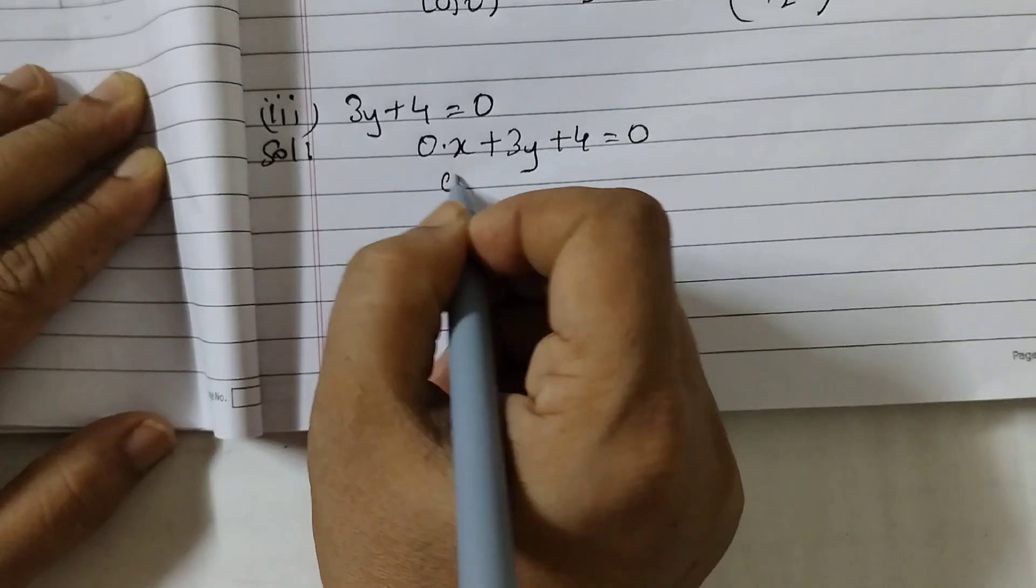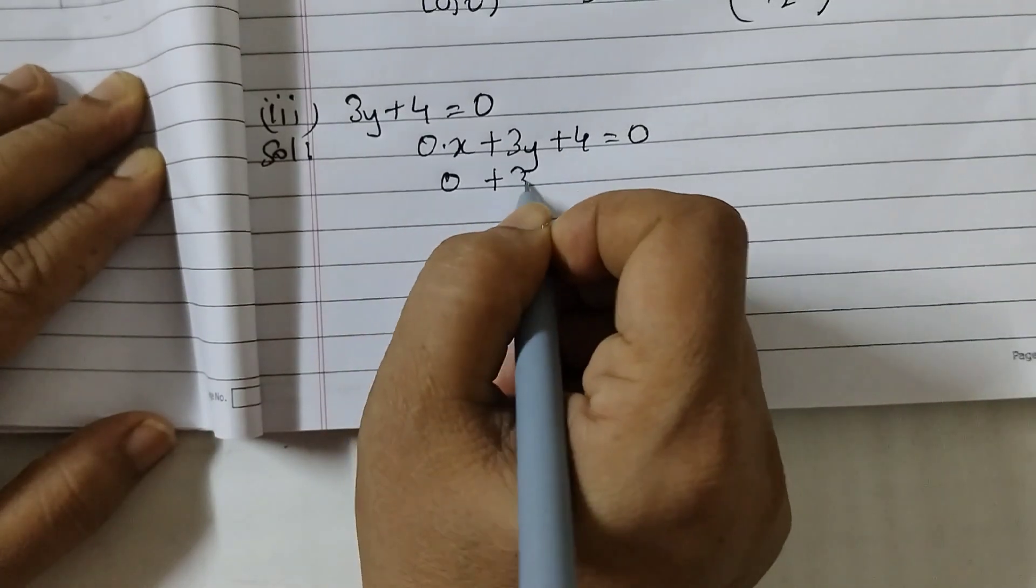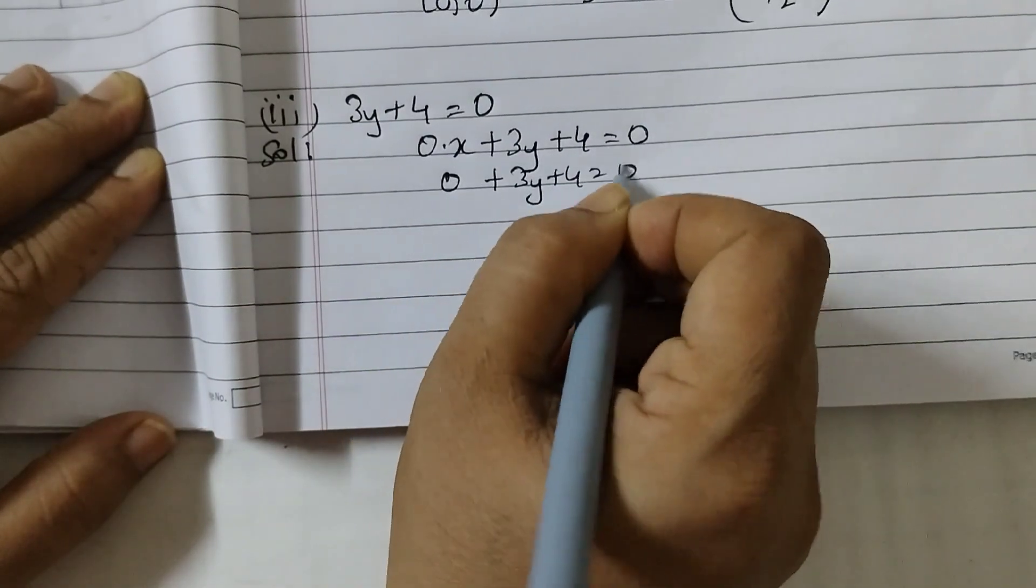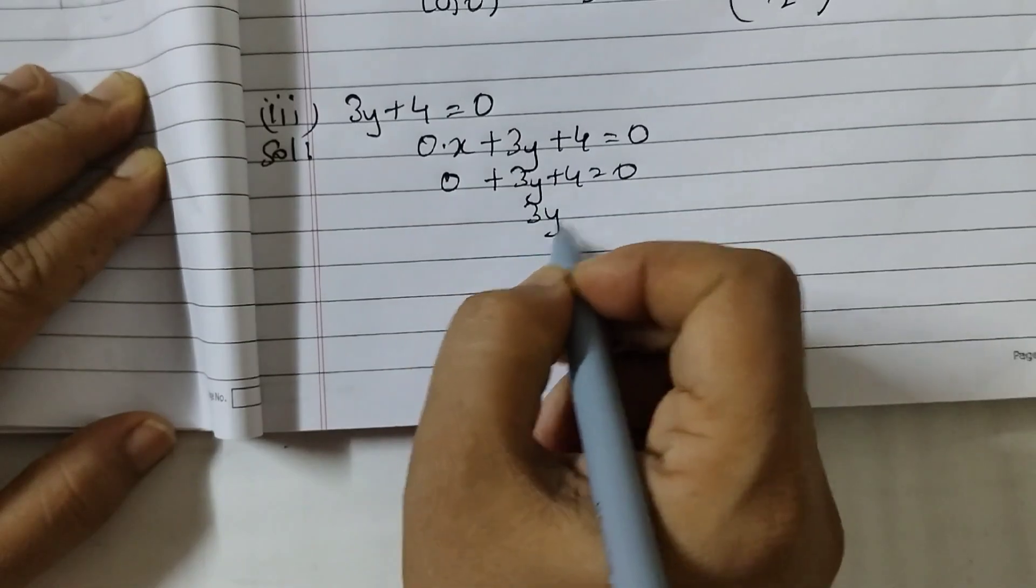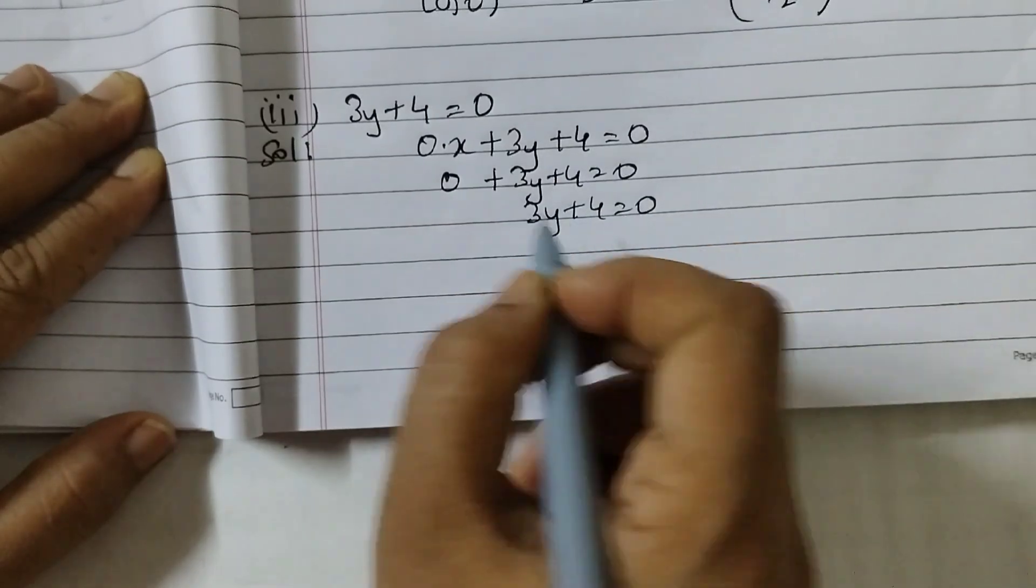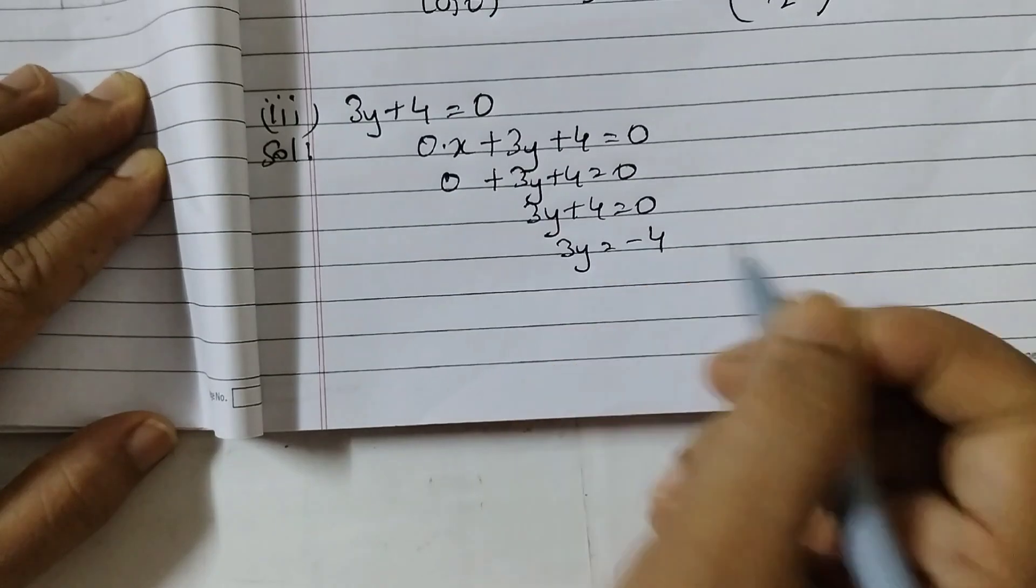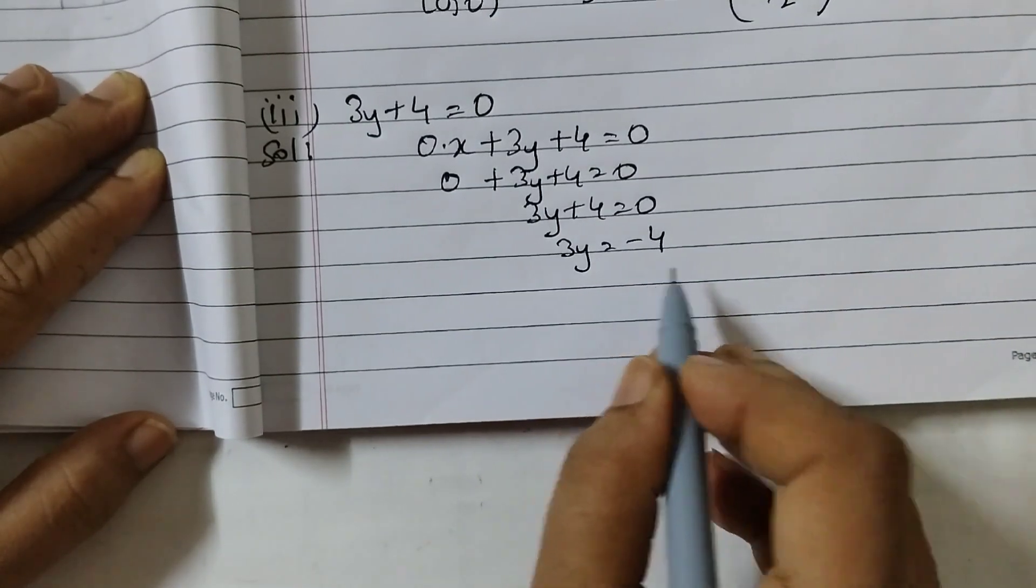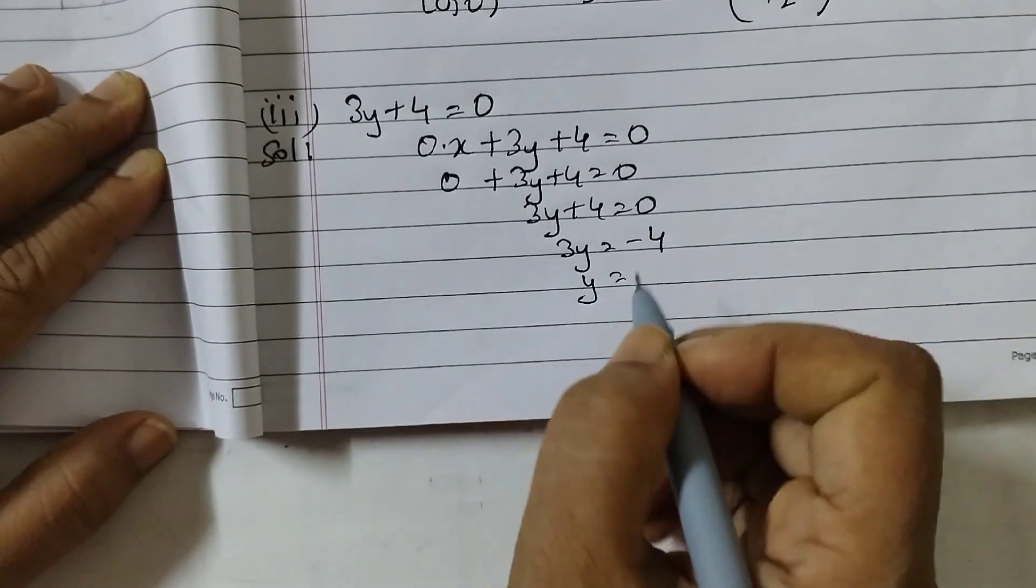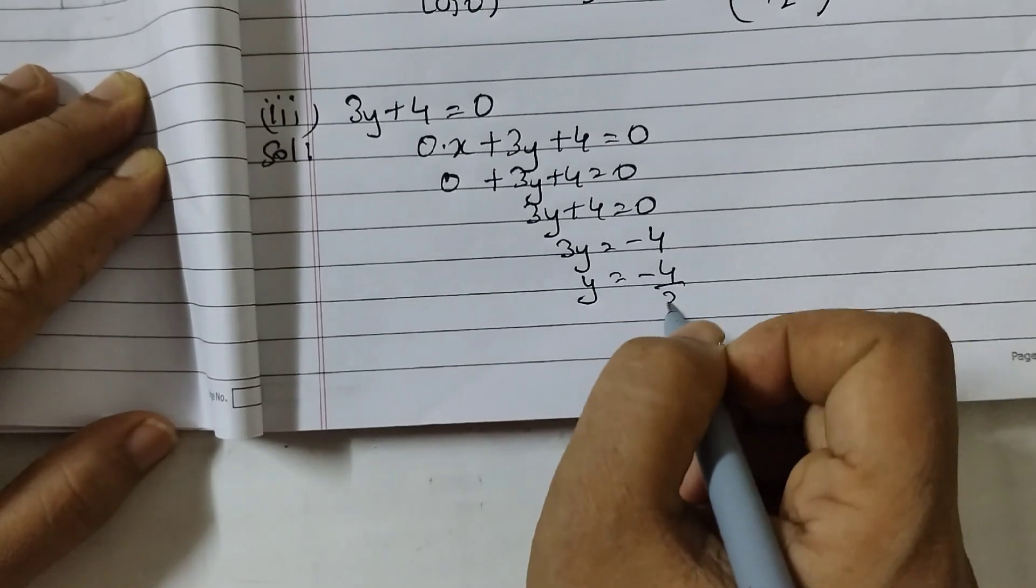But then when you solve it what will you get 0 plus 3y plus 4 equals to 0 or 3y plus 4 equals to 0. The same thing as the question and then take 4 to the other side that will be minus 4. Now divide both sides by 3. So minus 4 by 3.